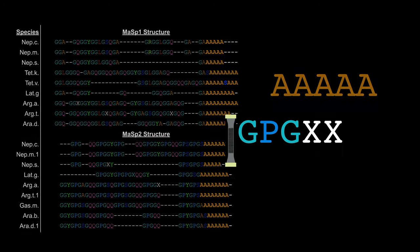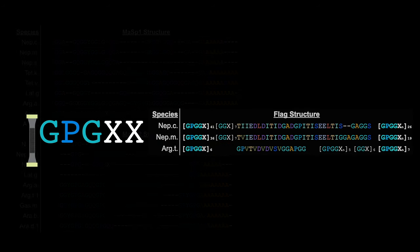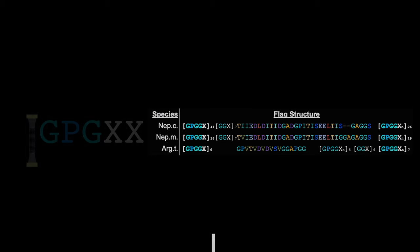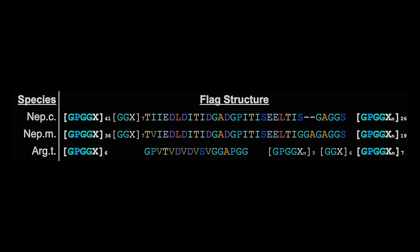One indication of this is the high prevalence of GPGXX regions in the single flagelliform silk protein, which happens to be the most elastic variety of orb-weaver silk. The amino acid composition of flagelliform silk can be seen here. Note the relative number of GPGXX regions, seen here as consistently GPGGX in all three species.